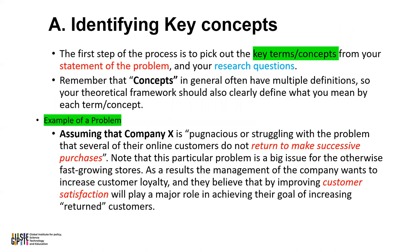First, identify key concepts. You should be able to look into the problem and the research question to know the key concepts that stand out. The first step of the process is to pick out the key terms or concepts from your statement of the problem and your research questions. Remember that concepts in general often have multiple definitions and they differ depending on the person looking at it. So your theoretical framework should clearly define what you mean by each term or concept associated with the framework.